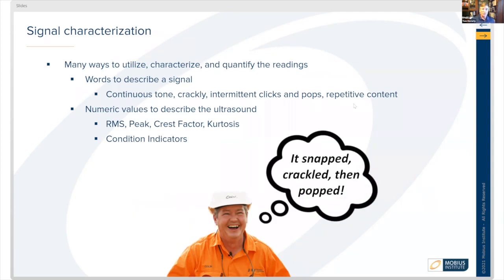Some of the words we can use to describe what we're hearing are whether it's a continuous tone, whether it's crackly, if there are intermittent clicks and pops, or whether it's repetitive content. Those are words we use to describe what we audibly hear when we heterodyne those ultrasound signatures down into the audible range.